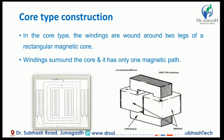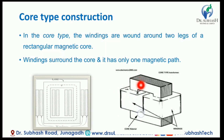You can see the core type — the core-type transformer has a construction where windings are wound around two legs of the rectangular magnetic core. In core-type transformers, the winding surrounds the core, and it has only one magnetic path.